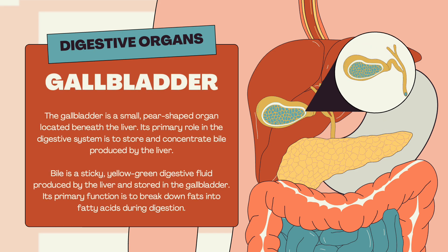The gallbladder is a small, pear-shaped organ located beneath the liver. Its primary role in the digestive system is to store and concentrate bile produced by the liver. Bile is a sticky, yellow-green digestive fluid whose primary function is to break down fats into fatty acids during digestion.